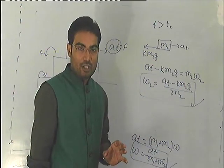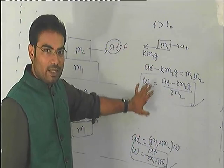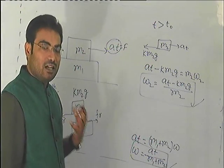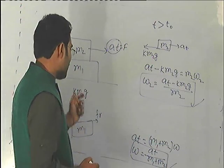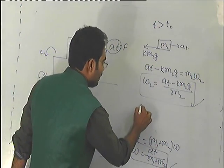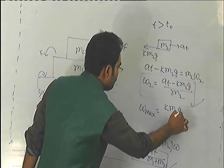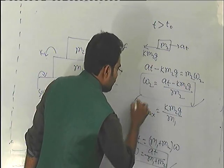After time T0, what is the acceleration of m1? The acceleration of m1 we have already calculated. M1 will reach its maximum acceleration, which is K m2 g divided by m1.